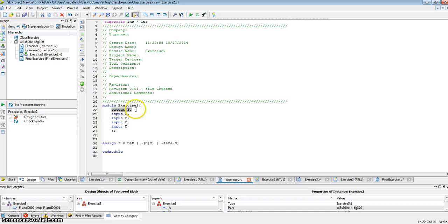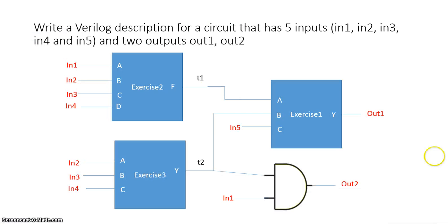In order a, b, c, and d. So when we call that module, or instantiate that module, we'll call that module u1. When we instantiate that module, we have to instantiate in the exact order for the inputs and outputs as described in that module. So first is output f. So in our description, output f is connected to t1.